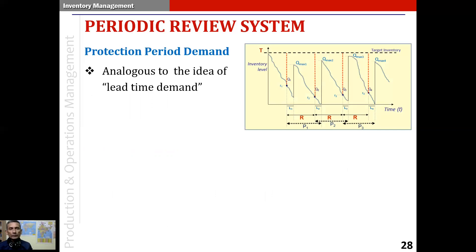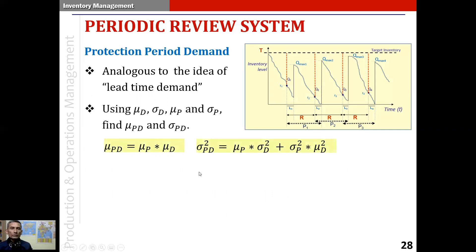To compute the target inventory level, we first compute the protection period demand. The idea of protection period demand is analogous to that of lead time demand, which we have seen earlier. We use similar formulas to compute the mean and variance of lead time demand. We use μ_d, σ_d, μ_p, σ_p to find μ_pd and σ_pd — the mean and variance of protection period demand.